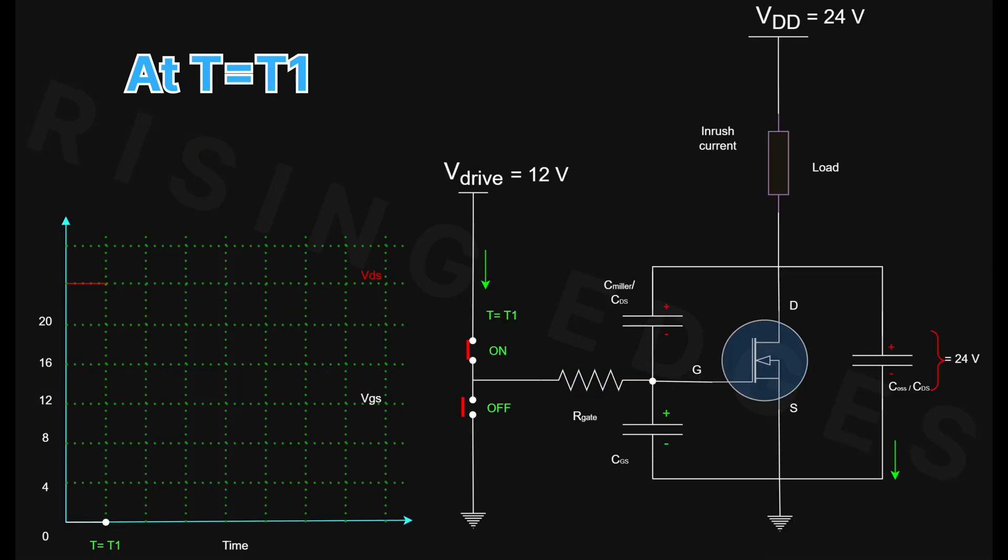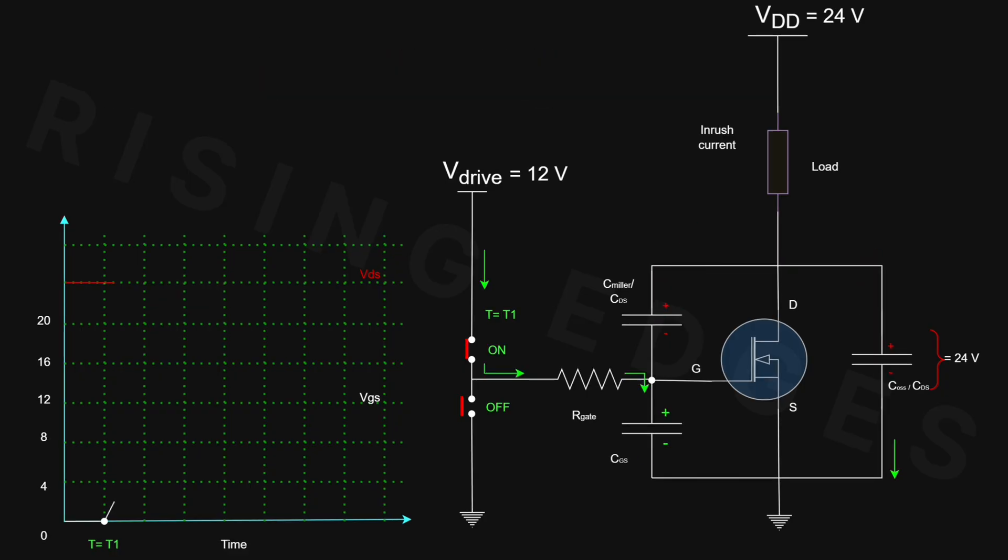Now at a time T equals T1, the bottom switch opens and the top switch closes. This applies V-drive to the gate, starting the charging process of CGS. During this time, the current flowing through the CDS and CGD, also known as the Miller capacitance, is very small so we can ignore it for now.